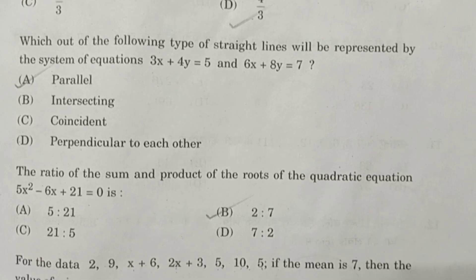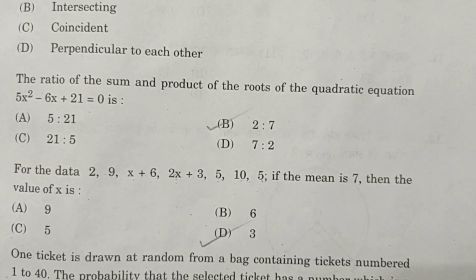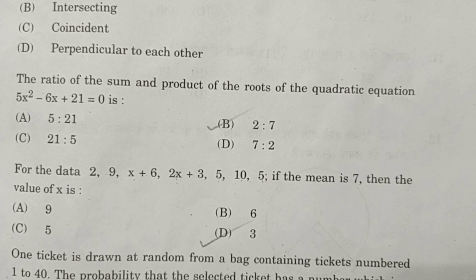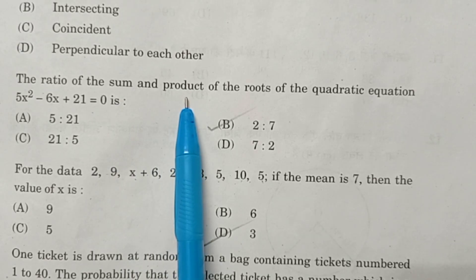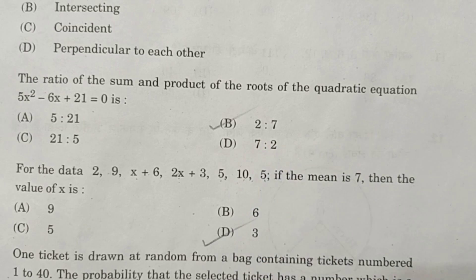Question number 5. The ratio of the sum and the product of the roots of the quadratic equation 5X squared minus 6X plus 21 is. Find the sum and then find the product, after that find the ratio of sum and product. The answer will be 2 is to 7.